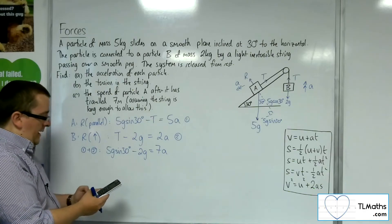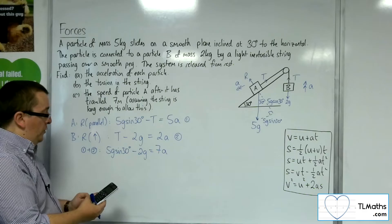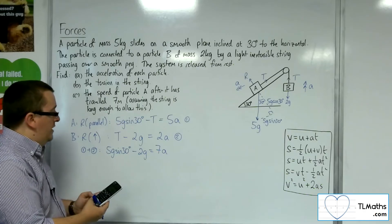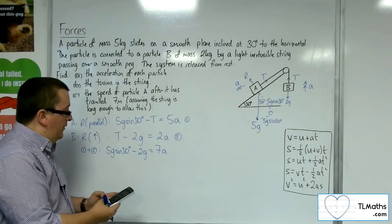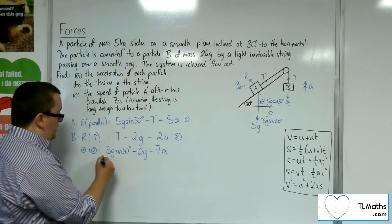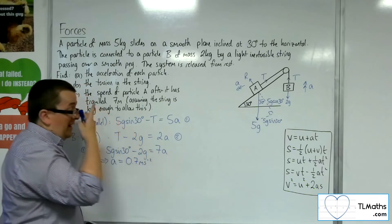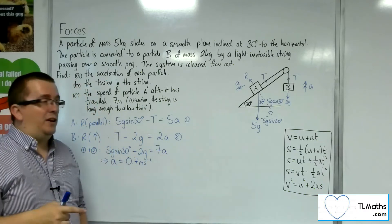5 lots of 9.8 times sine of 30 is 49 halves, take away 2 lots of 9.8 is 49 tenths, and then I want to divide that by 7 to get the acceleration. So A is 0.7 meters per second squared. So that's the acceleration.